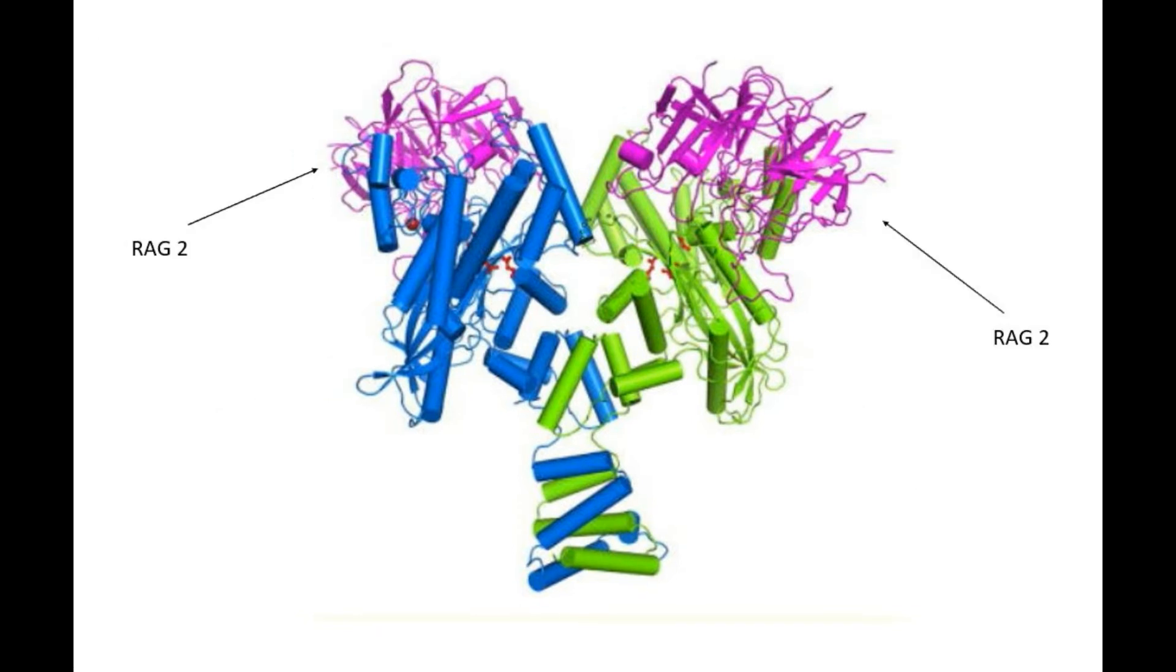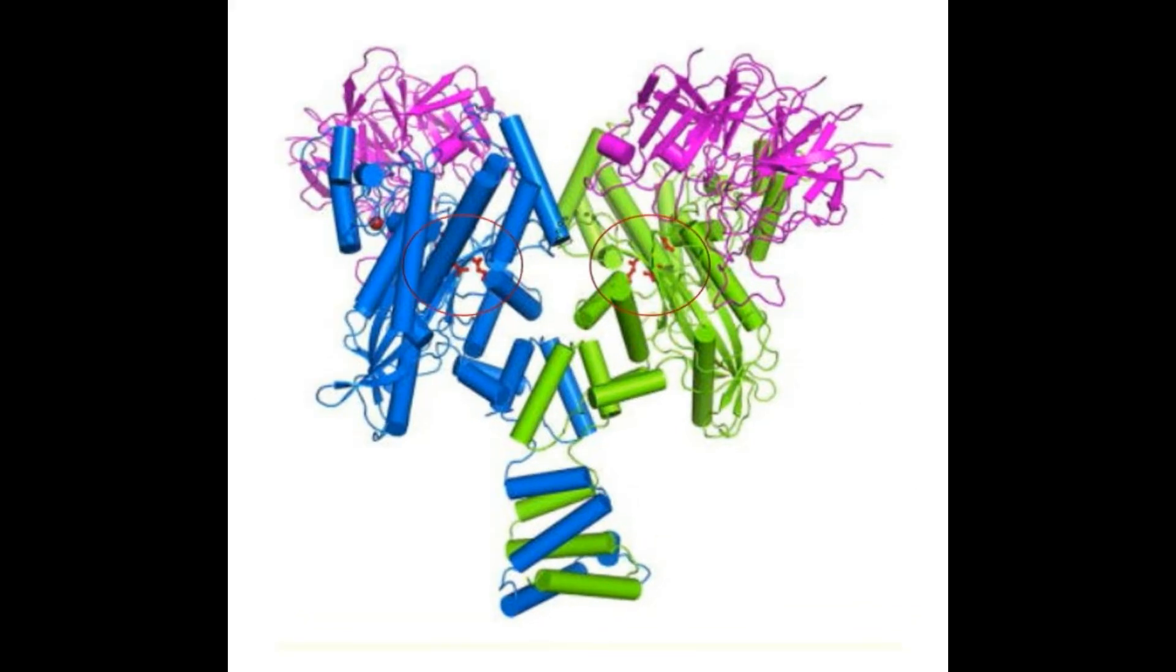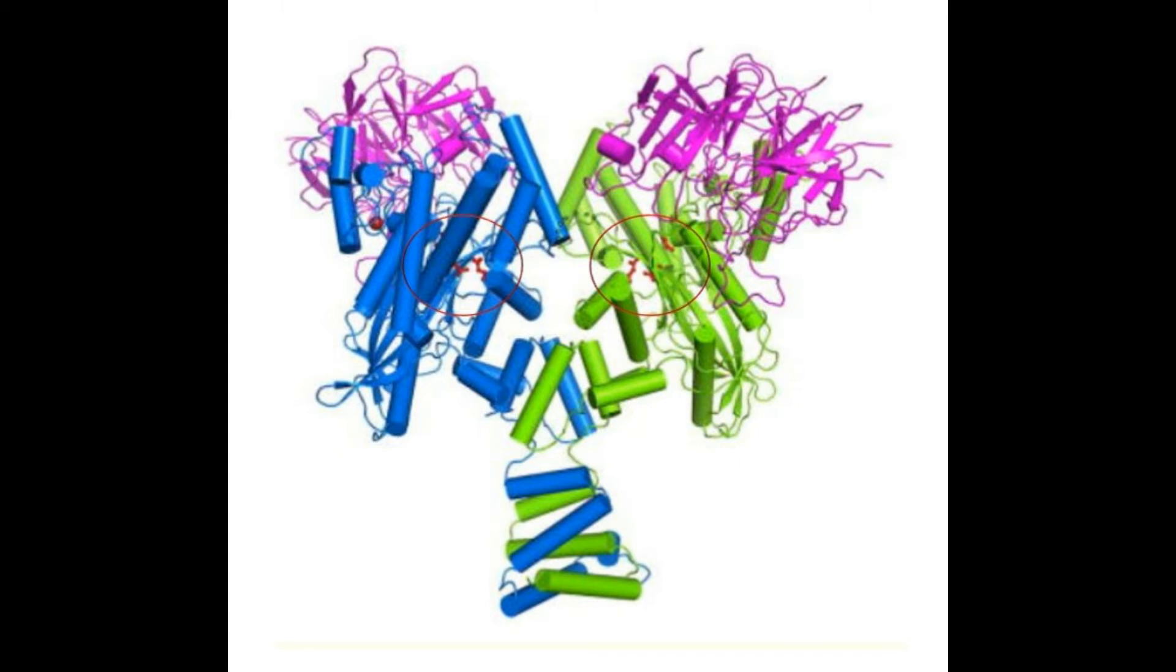The active sites are highlighted by the three carboxylates, shown as red sticks, and the zinc ions are shown as dark red spheres. Each RAG1 and RAG2 heterodimer composes one arm of the Y with the active site in the middle and RAG2 at its tip. There are four zinc ions that help organize the entire domain, including the two helices that form the dimer interface.